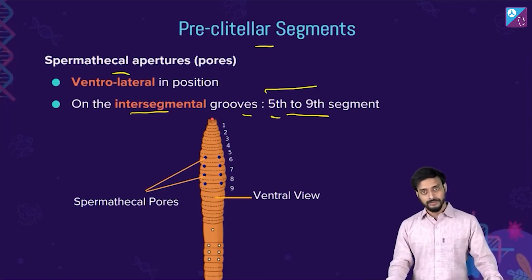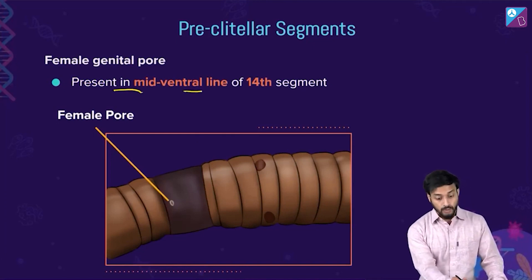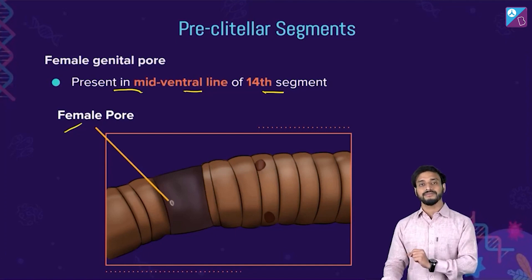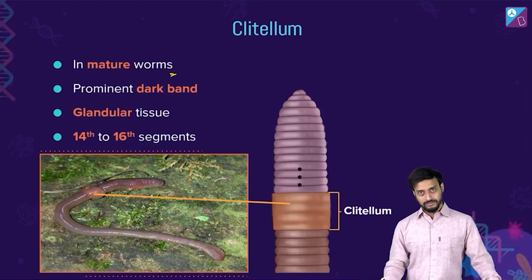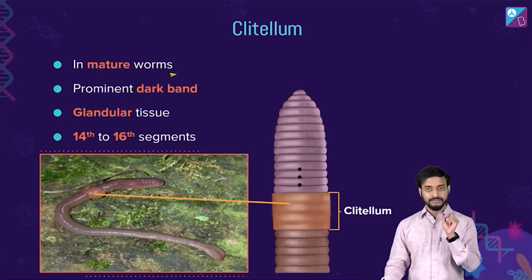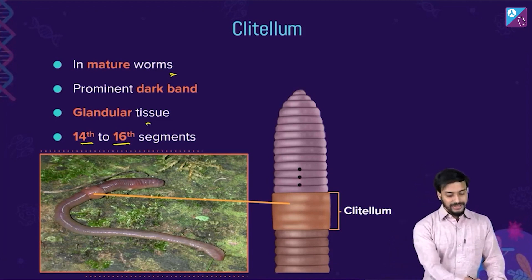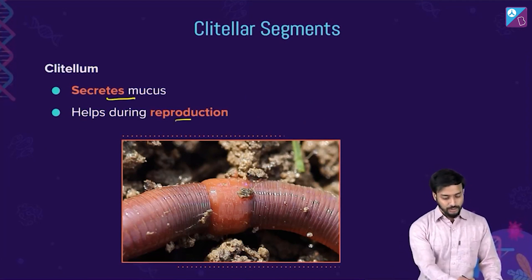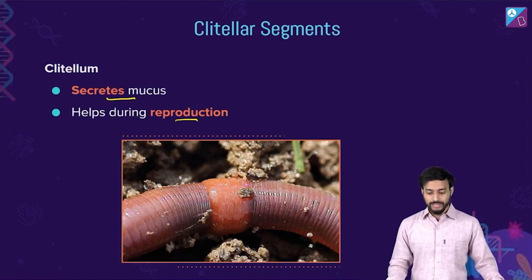The female genital pore is present in the mid-ventral line of the 14th segment. Now for the clital segments: the clitellum is present in mature worms as a prominent dark band in the 14th to 16th segment with glandular tissues. Its function is to secrete mucus and help during the reproduction process.